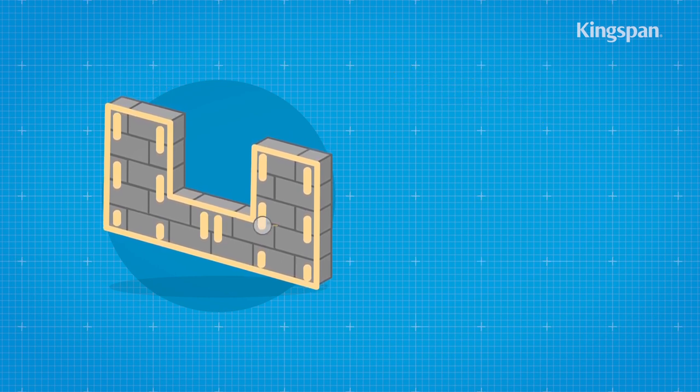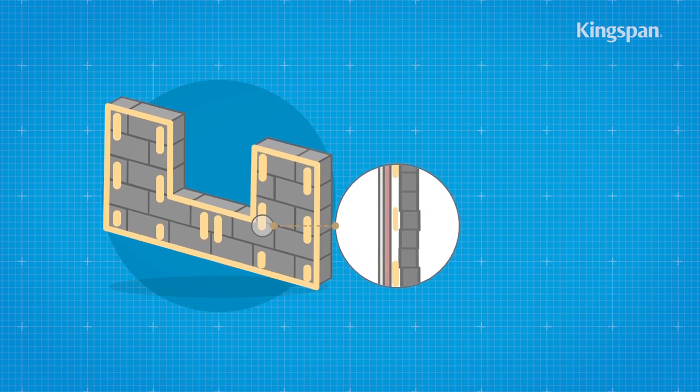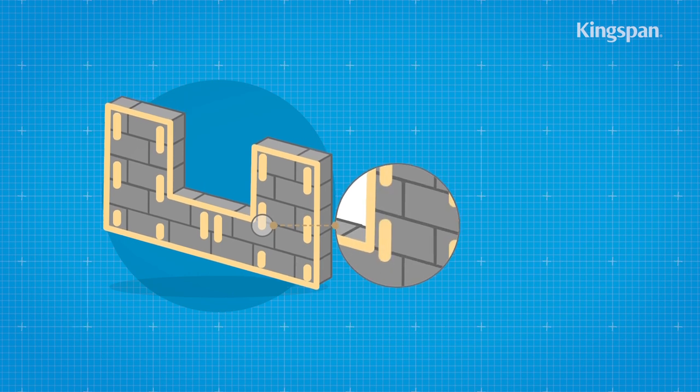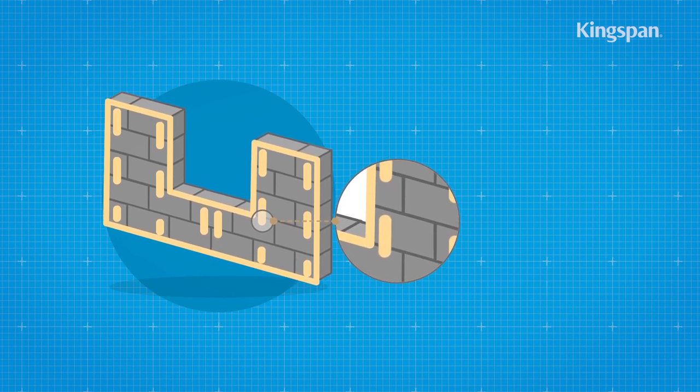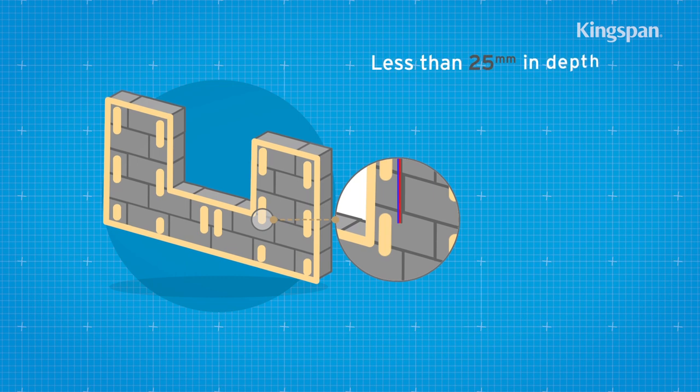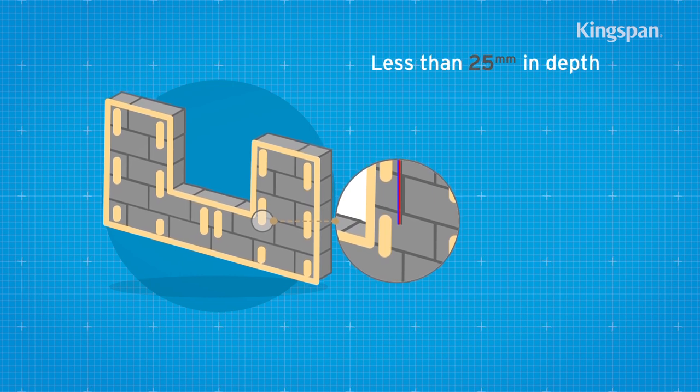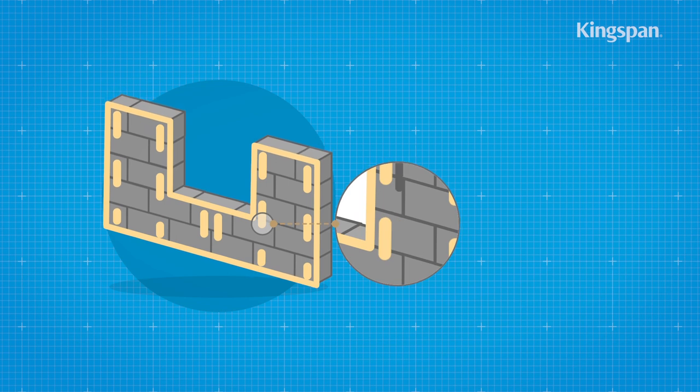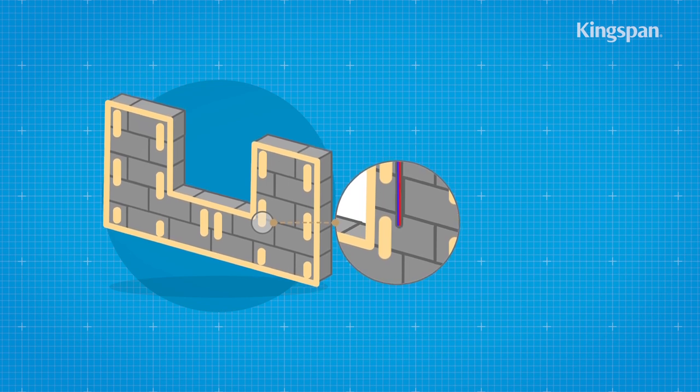Any minor irregularities of the substrate can be corrected within the dab depth. The cavity formed by the dabs can also be used to incorporate surfaces less than 25 mm in depth. Alternatively, minimum chasing of the background will be required.